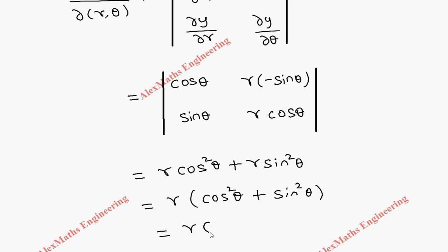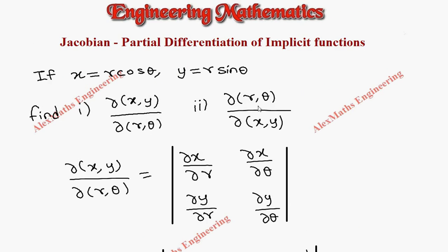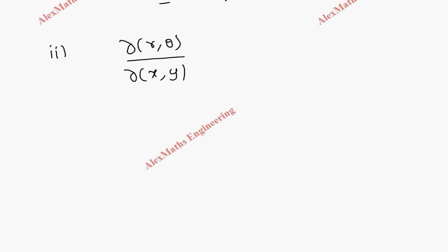In subdivision 2, we are finding the reciprocal: ∂(r,θ)/∂(x,y). We have a property for this.